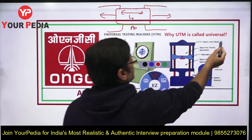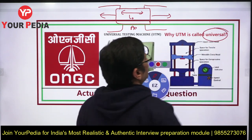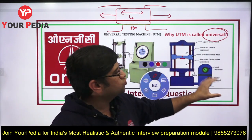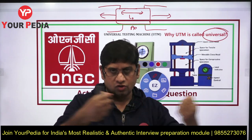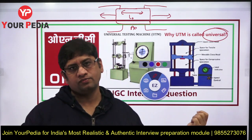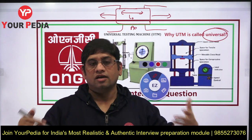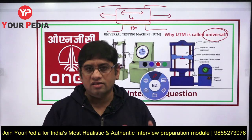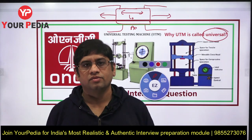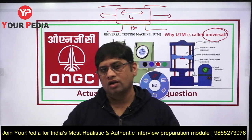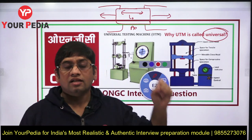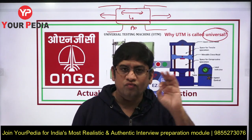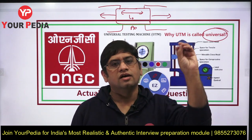It is called 'universal' because this machine is not only used for tensile loading tests. It is also used for other kinds of loading — compressive loading, shear loading, and other types of tests. That is the reason it is called a universal machine.